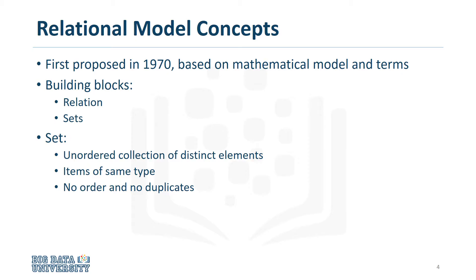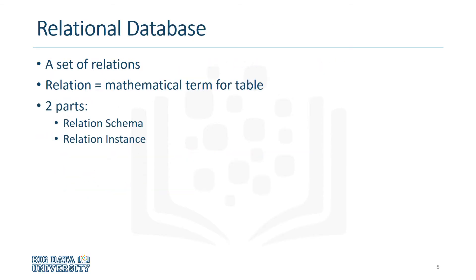A set is an unordered collection of distinct elements. It is a collection of items of the same type, with no order and no duplicates. A relational database is a set of relations. A relation is also the mathematical term for a table, and a table is a combination of rows and columns.